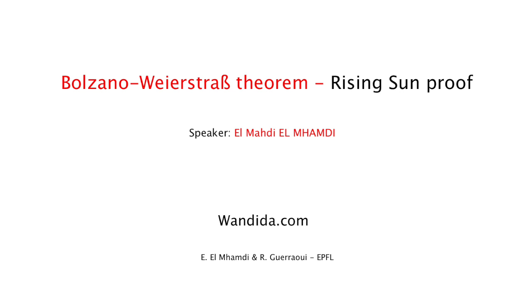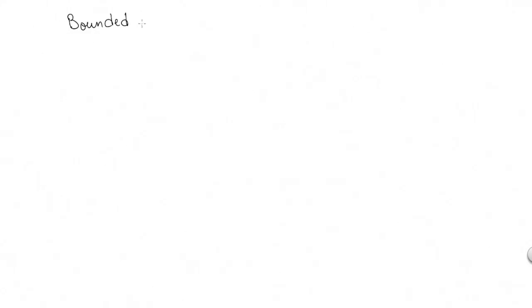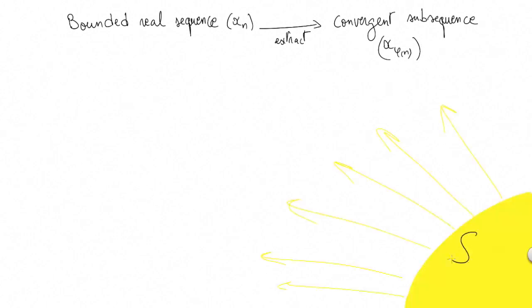The Bolzano-Weierstrass theorem is a fundamental theorem in analysis stating in its simplest version that from a bounded real sequence xn, we can extract a convergent subsequence x phi. In this lesson, I will prove it imagining a sun rising from the horizon.